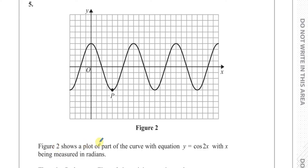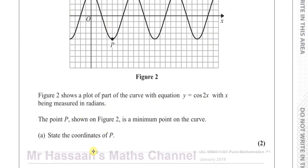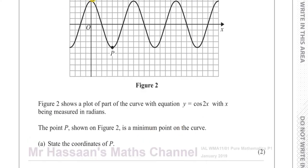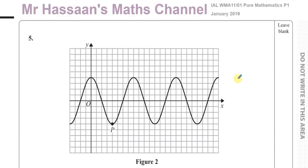Here we have figure two showing part of the curve with equation y equals cosine 2x, with x being measured in radians. The point P shown in figure two is a minimum point on the curve — state the coordinates of P. First of all, let's think about y equals cosine x. We should know how that curve looks. The cosine of 0 is 1, cosine of pi over 2 is 0, cosine of pi is minus 1, cosine of 270 is 0, and cosine of 360 is 1.